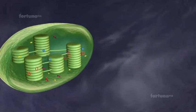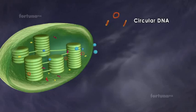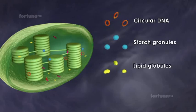Within the stroma, circular DNA, tiny lumps of starch granules, lipid globules and ribosomes are present.